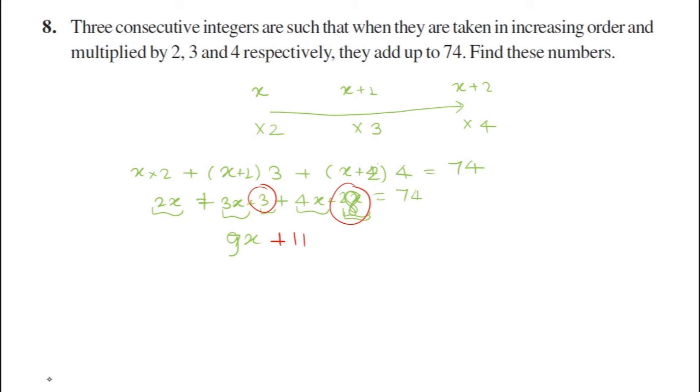So 9x plus 11 equals 74. So 9x will be 74 minus 11. 9x comes as 63. x comes as 63 by 9 that can be written as 7. Perfect.